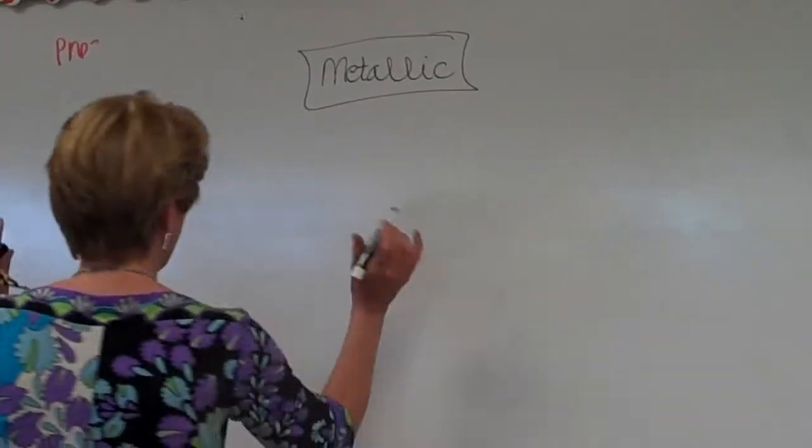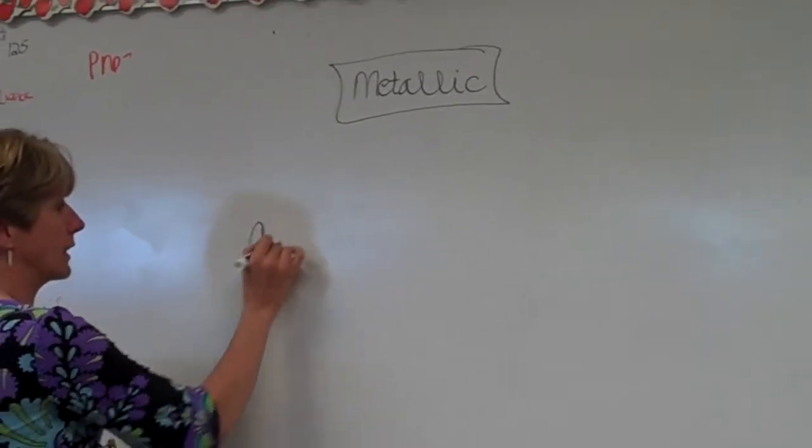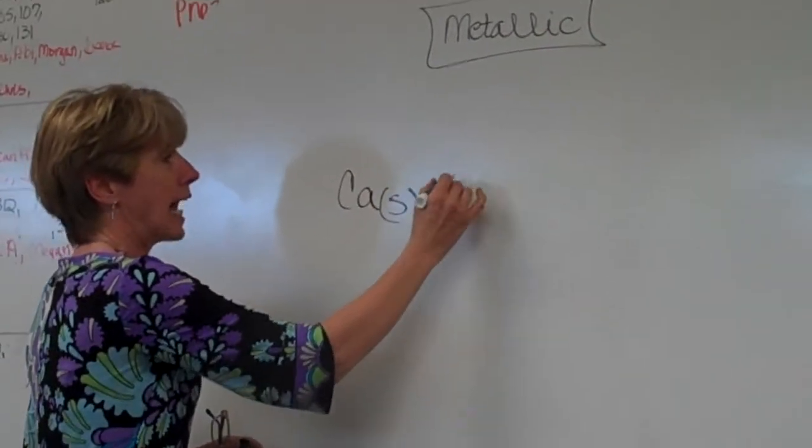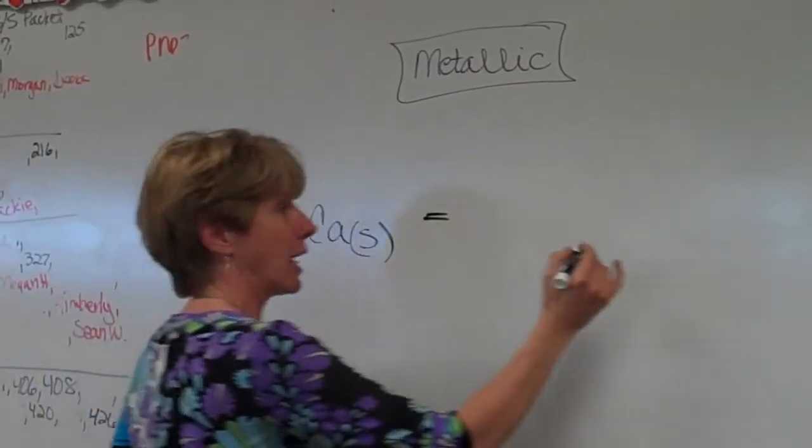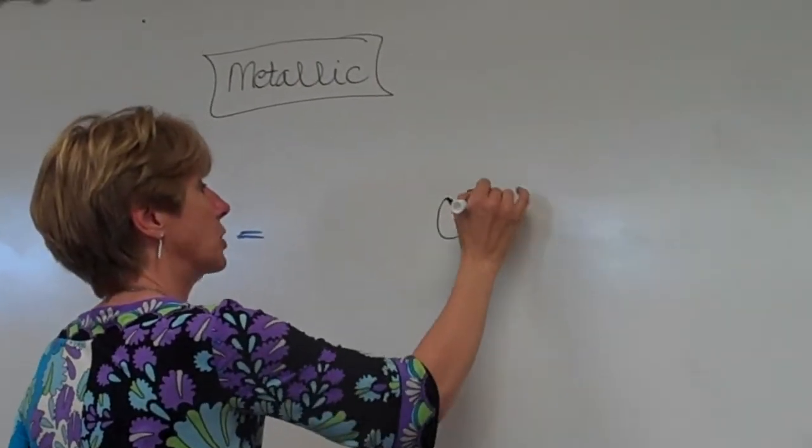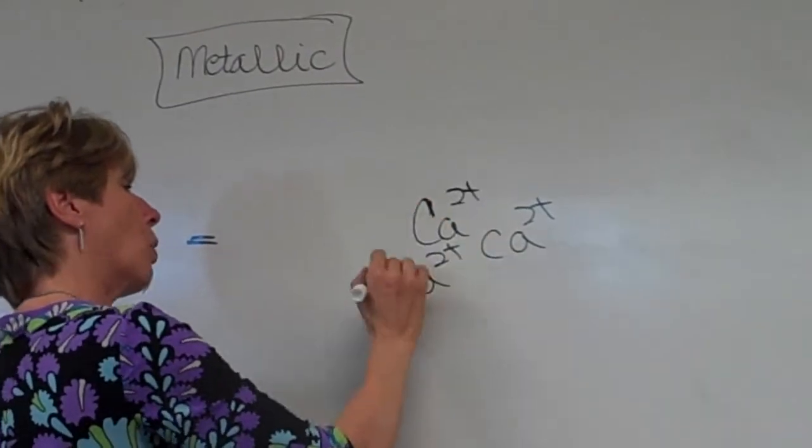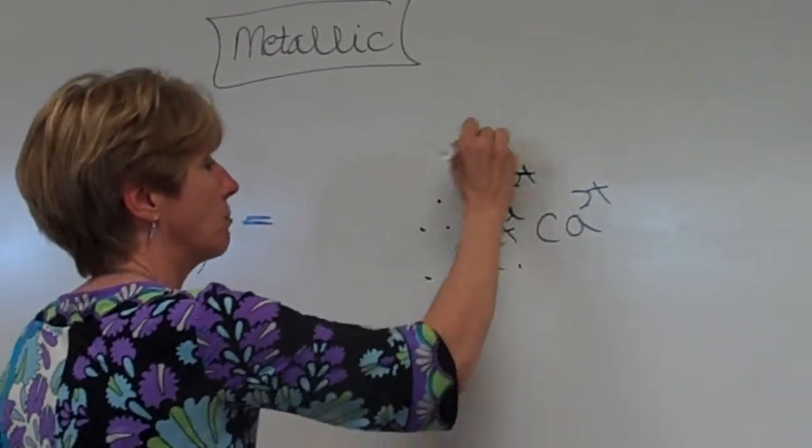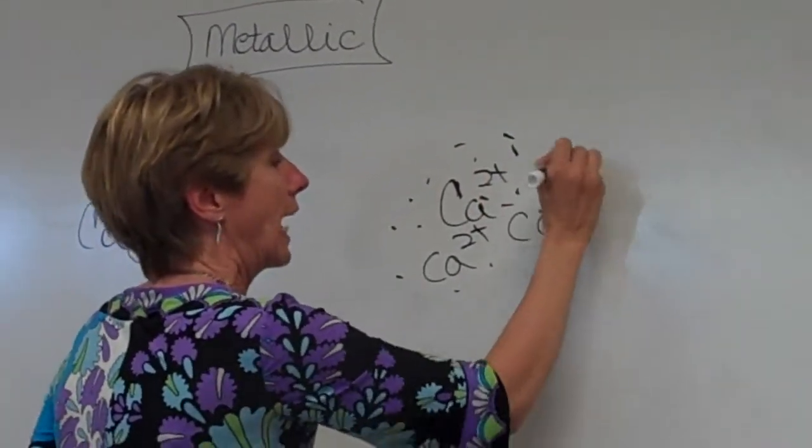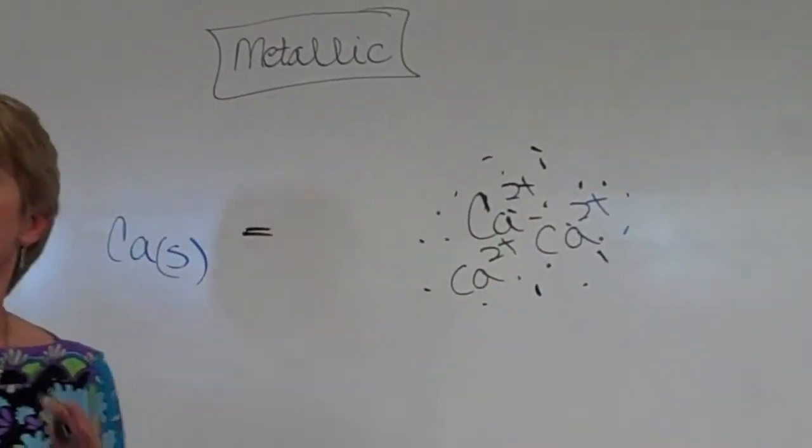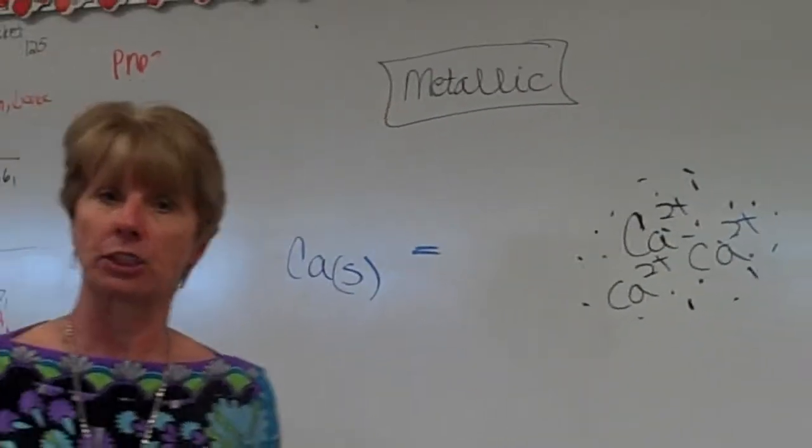Okay, do you remember that they said, like, let's give an example, calcium metal. Calcium metal is actually made up of a whole bunch of calcium 2 plus ions with mobile electrons moving between the atoms. They call it the sea of mobile electrons.